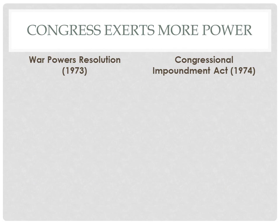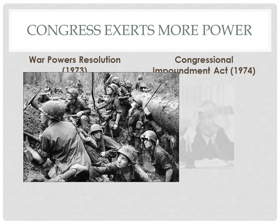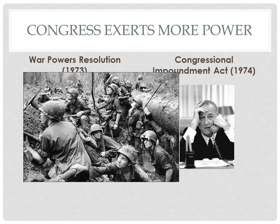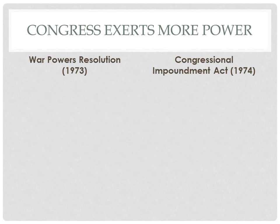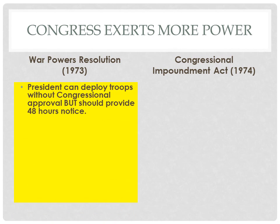During the 1970s, Congress took several actions to try to exert more power back over the presidency. This was ignited in large part due to their feeling of mismanagement over the Vietnam War, in which they felt that the presidents involved had abused their power of commander-in-chief and lied to Congress through the exposure of the Pentagon Papers released in 1971 by Supreme Court order. Thus, in 1973, Congress acted with the War Powers Resolution, which stipulates that the president can still deploy troops without Congress's approval but should give them 48 hours' notice.